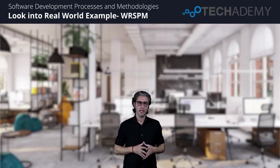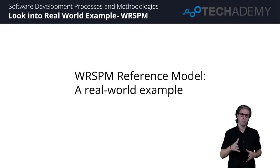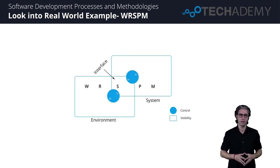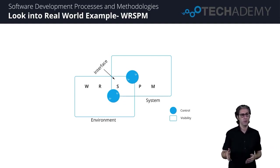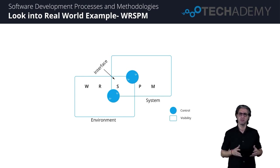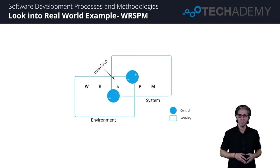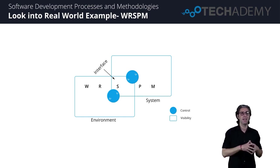Thanks a lot for watching the last videos and welcome to this session. Today, we are going to take a closer look at a real-world example to understand the WRSPM reference model in action. We have the world assumptions and the requirements both residing in the environment area of visibility. The S — meaning specifications — sits within the interface between the environment and our system. The program and the machine have software and hardware set within the system's level of visibility. We then look at the control with the use of four variables: EH, EV, SV, and SH.